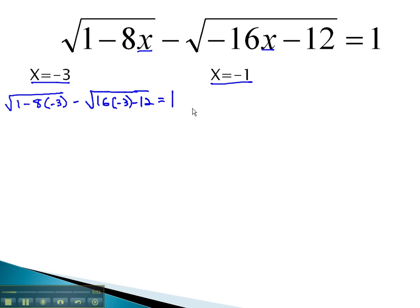Hopefully, we'll equal 1. Multiplying inside each of those radicals gives us the square root of 1 plus 24, minus the square root of... Oops, that's negative 16. Helps if I copy the problem right. Equals the square root of 48, minus 12. Hopefully, we'll equal 1.